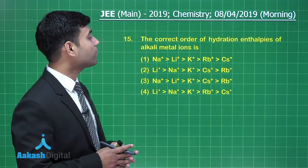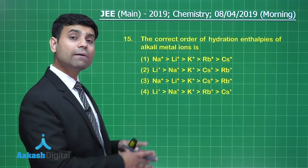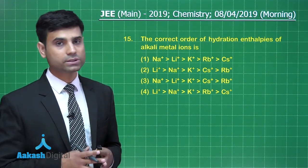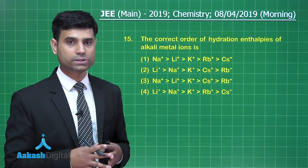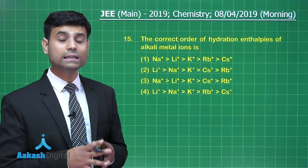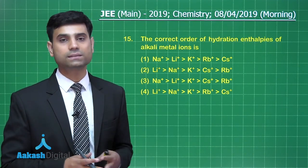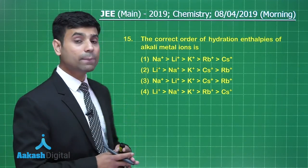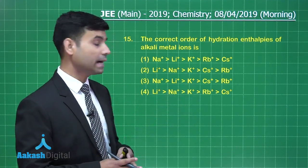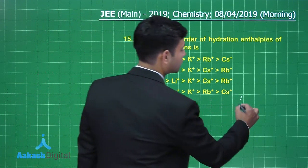The next question asks for the correct order of hydration enthalpy of alkali metal ions. The smaller the size of the ion, the greater the hydration enthalpy. Moving down Group 1, as size increases, hydration enthalpy decreases. So the order is: Li⁺ > Na⁺ > K⁺ > Rb⁺ > Cs⁺ (maximum for Li⁺, minimum for Cs⁺). The correct answer is option 4.